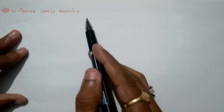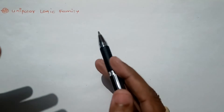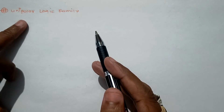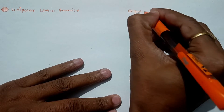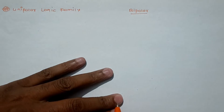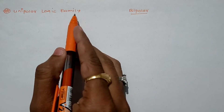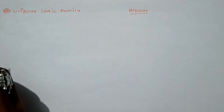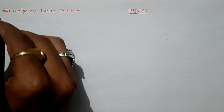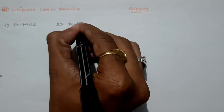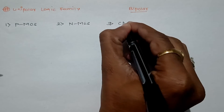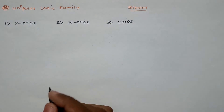Hello everyone. In this video we will see unipolar logic families. Basically there are two types of logic families: one is called a unipolar logic family, and the second, which we will see in next videos, will be called a bipolar logic family. So let us concentrate on unipolar logic family. We have three types: PMOS, NMOS, and CMOS.